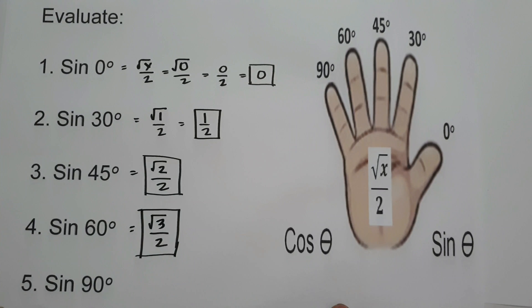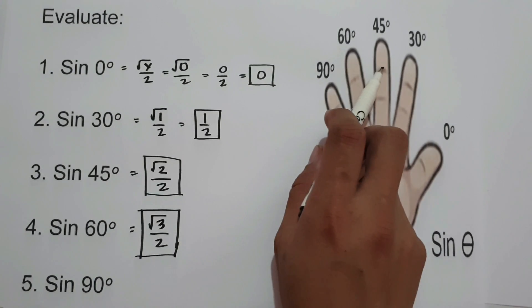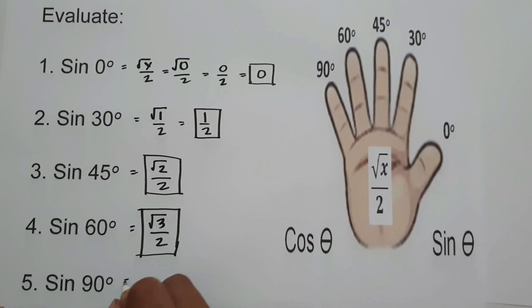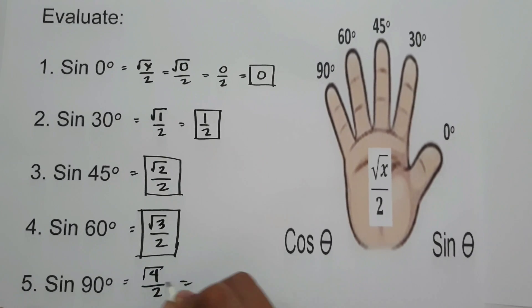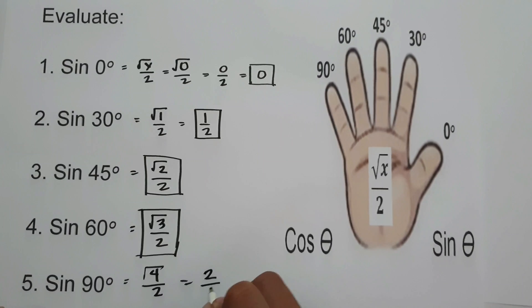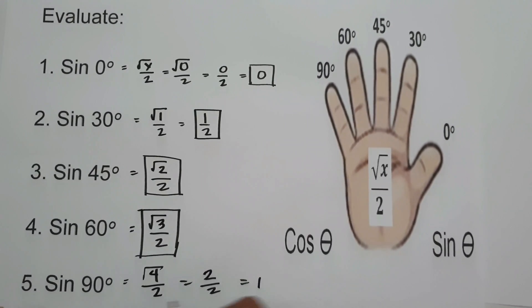For sine 90°, let us count the fingers between 90° and sine: 1, 2, 3, 4. Therefore we have square root of 4 over 2. Square root of 4 is 2, and 2 divided by 2 is 1. So sine 90° is 1.